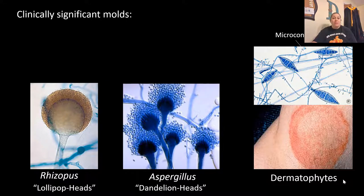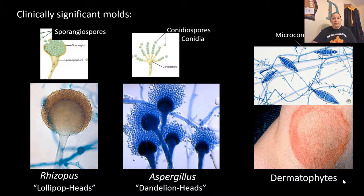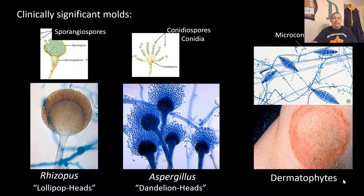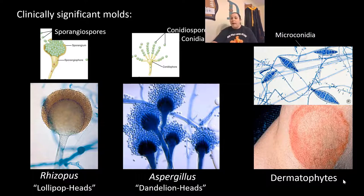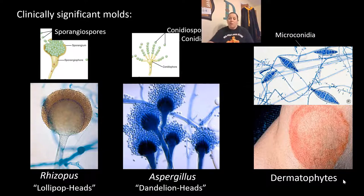Why are molds clinically significant? Sporangiospores are found in Rhizopus, which has lollipop-looking heads under the microscope with spores inside. Rhizopus is the main type of mold that causes black bread mold. Conidia spores — an example is Aspergillus, which has more of a dandelion-like head structure microscopically. We also see microcondia, which are small and mostly responsible for dermatophytes — infections on the skin — such as ringworm.